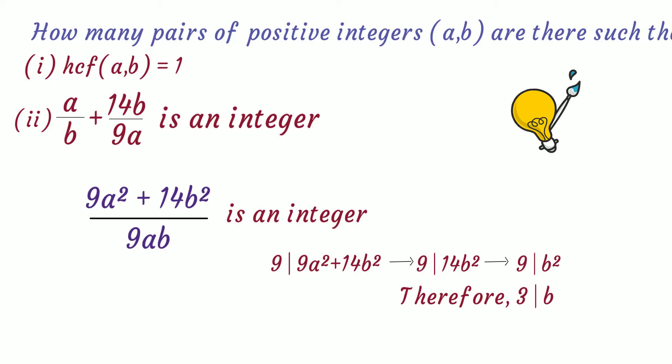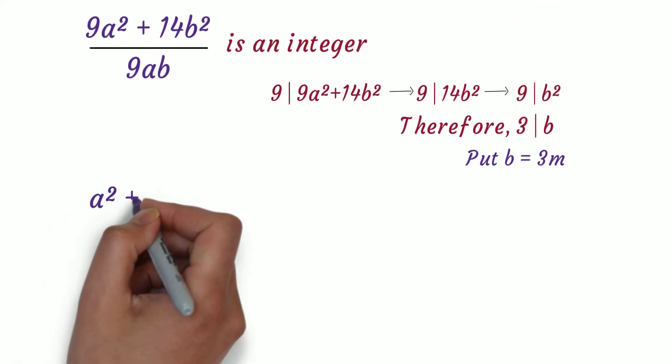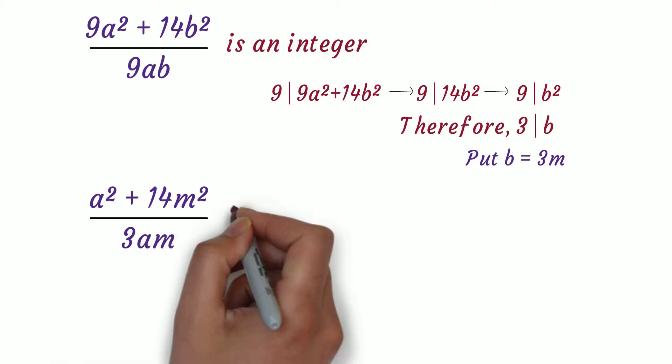So let's take b = 3m. Substituting b = 3m in the original expression, we get (a² + 14m²)/(3am) is an integer.